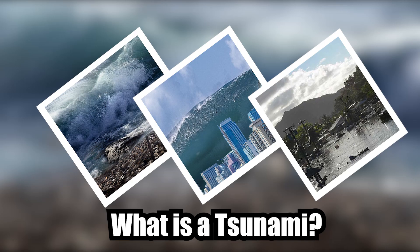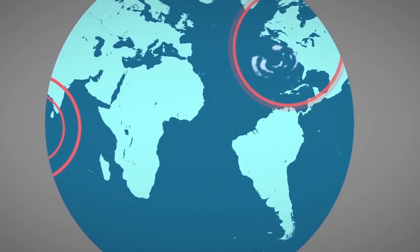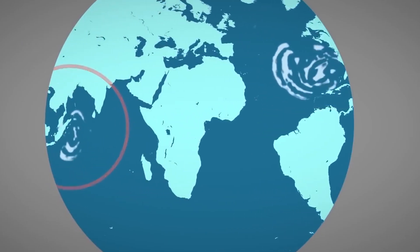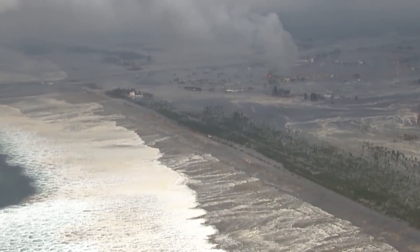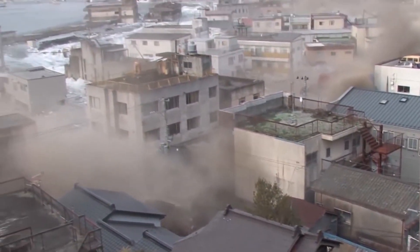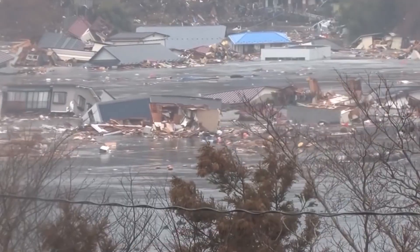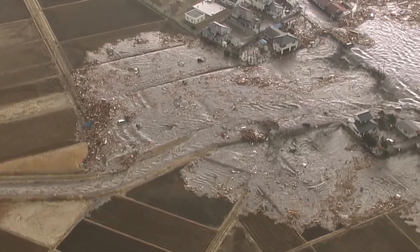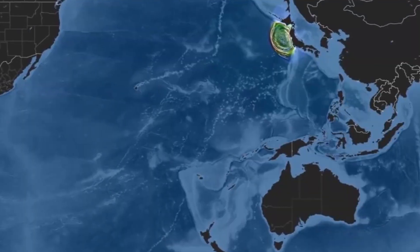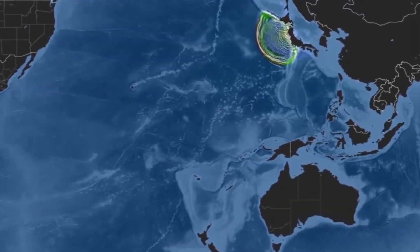What is a tsunami? A tsunami is a series of ocean waves with very long wavelengths caused by large-scale disturbances of the ocean, such as earthquakes, volcanic eruptions, and landslides. Unlike normal ocean waves that are caused by wind, tsunamis are generated by a displacement of the seafloor. The word tsunami comes from the Japanese language, which translates to harbor wave.